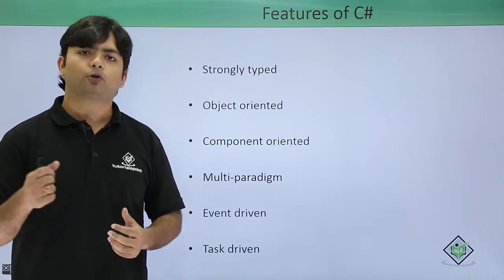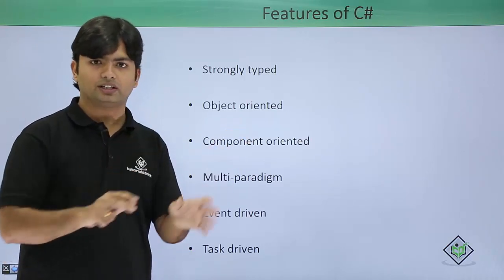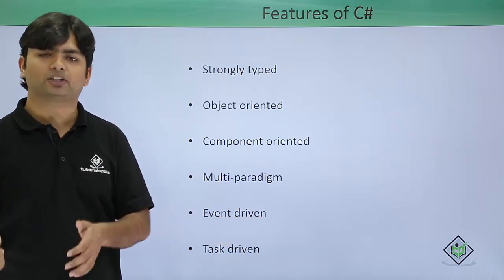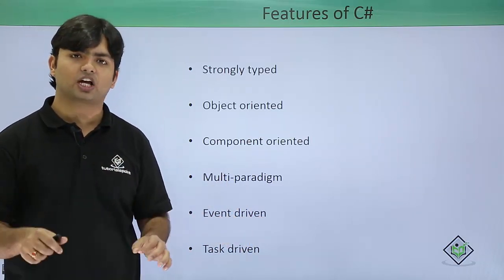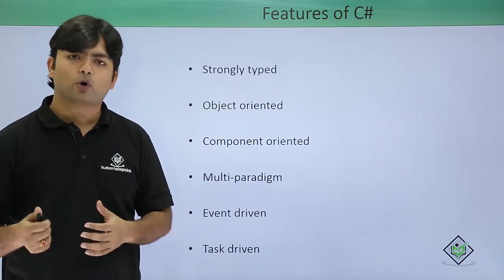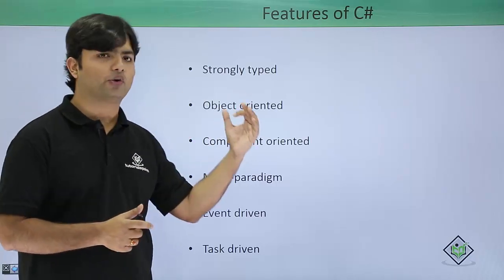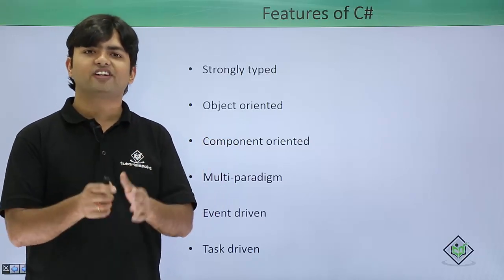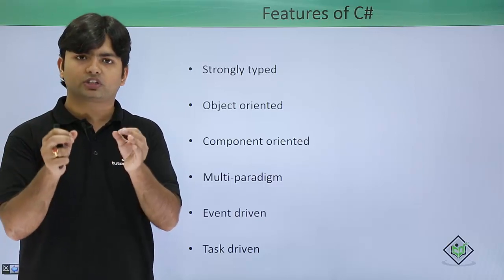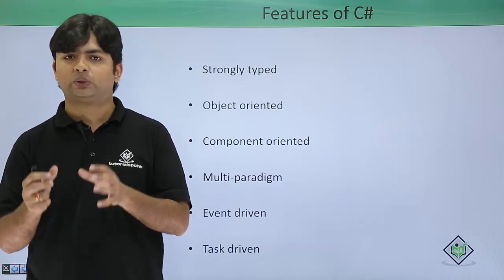Now let's see some features of C#. It is strongly typed, meaning whenever you use any data you must declare its data type — whether you are processing strings like 'Tutorials Point', numbers, or user-defined types, everything must have a type. It is also object-oriented, meaning C# supports object-oriented programming (OOP). If you don't know OOP or anything about programming, don't worry — we will cover each and every topic required to learn this programming language properly.